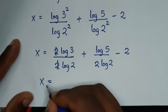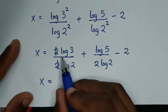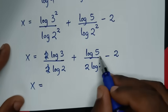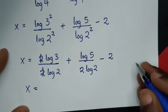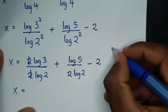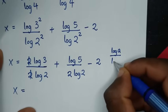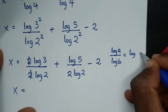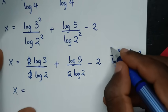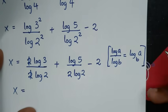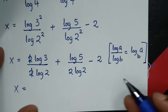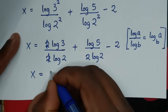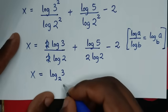The 2s cancel, giving x is equal to log of 3 over log of 2, plus log of 5 over log of 2, minus 2. Now log of 3 over log of 2 and log of 5 over log of 2 are in the form of log of A over log of B, which equals log of A base B. So we apply this form: log of 3 over log of 2 is the same as log of 3 base 2.